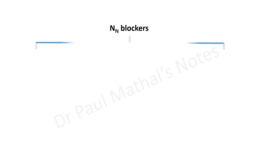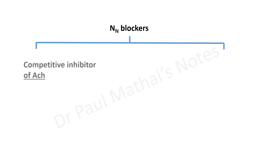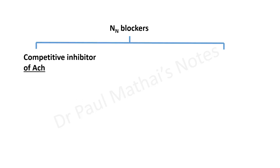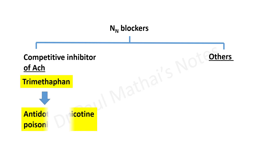The NN blockers may be classified into competitive inhibitors of acetylcholine at the NN receptor like trimethaphan, and others like hexamethonium. It is worth noting that trimethaphan is considered an antidote for nicotine poisoning.